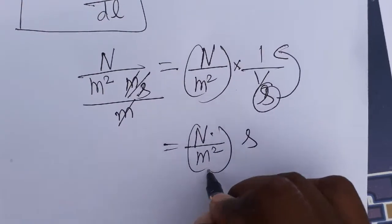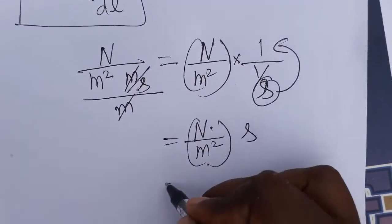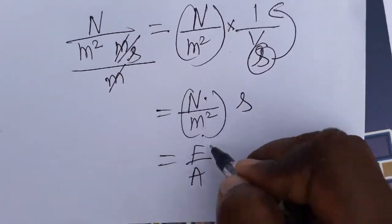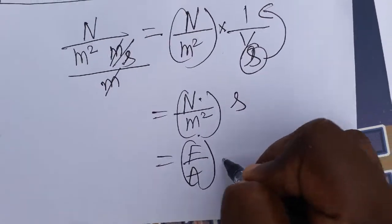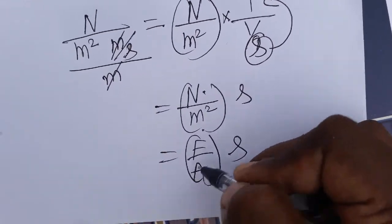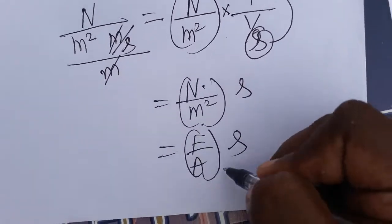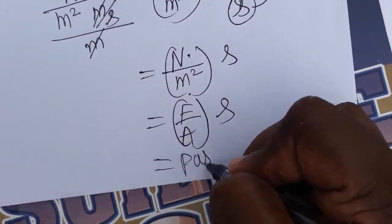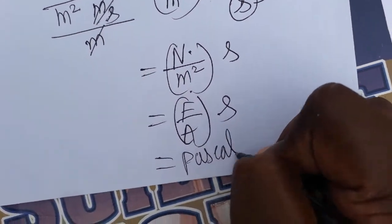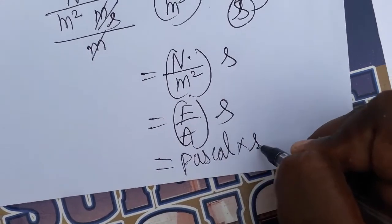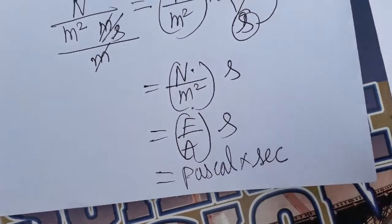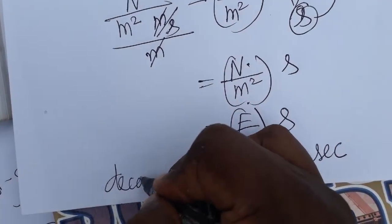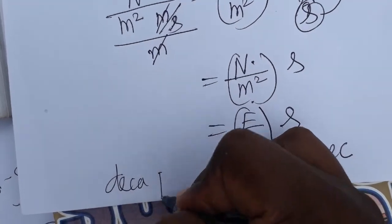The second in the denominator moves to the numerator, giving us Newton per meter square into second. Newton per meter square is force per unit area, which is pressure — and pressure is Pascal. So Pascal into second, which we can take as Decapoise.